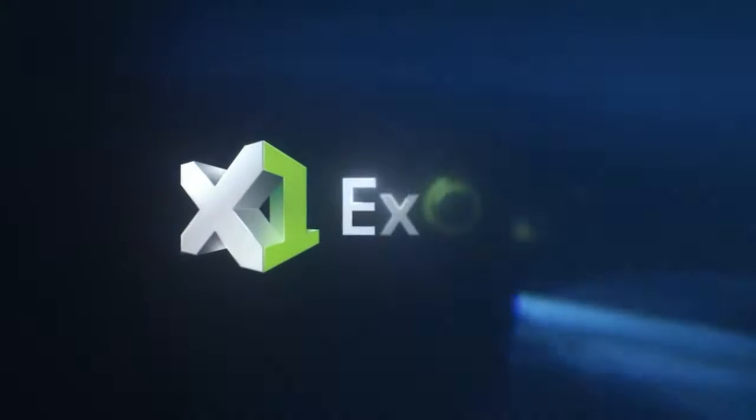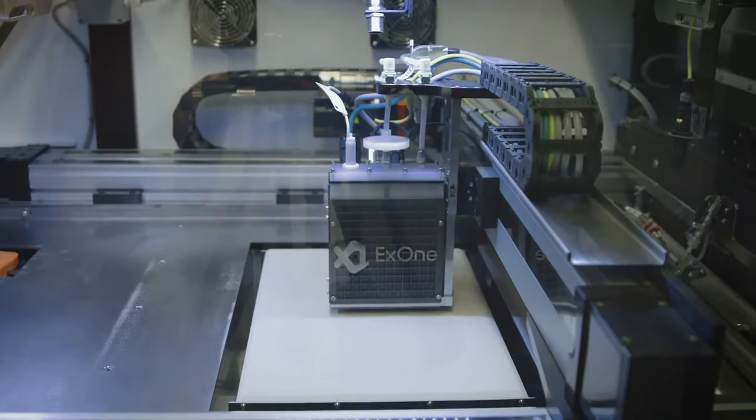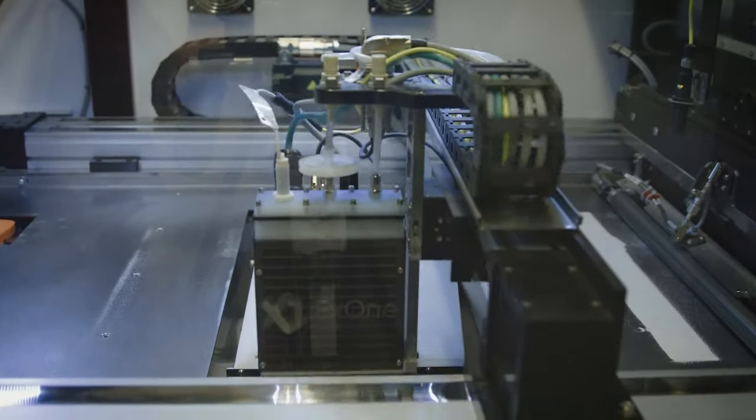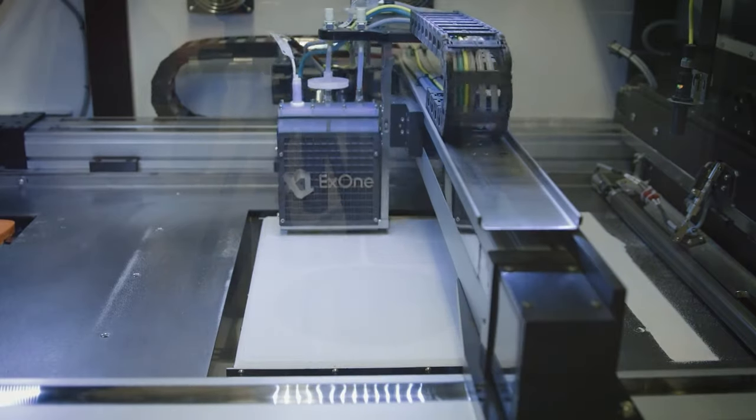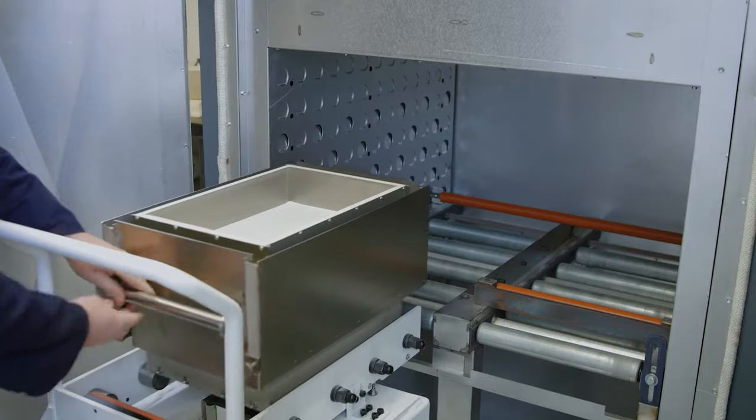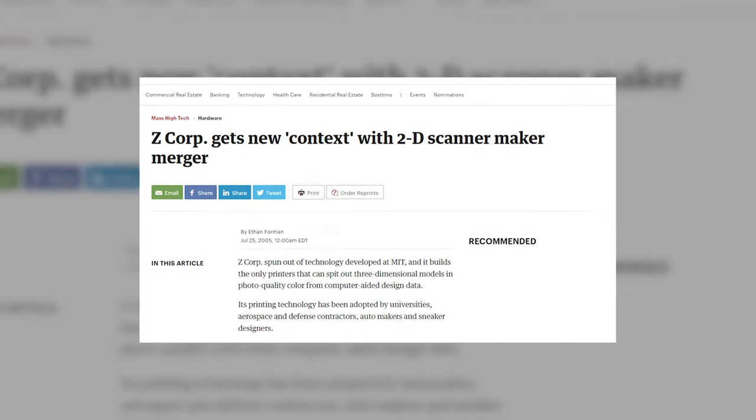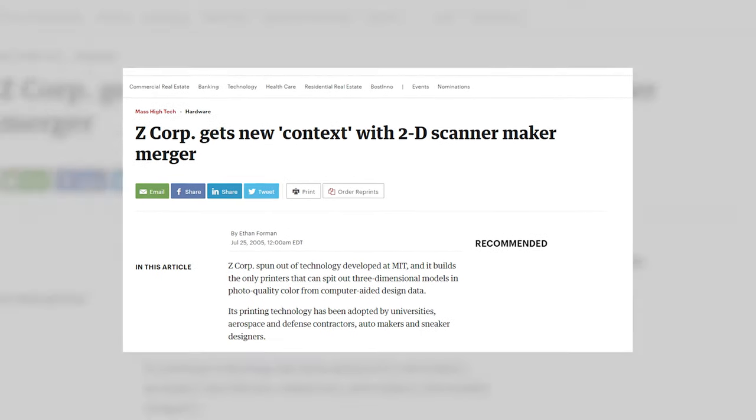Over time Generis split into two separate companies: Voxeljet and ExOne. Today the two companies are leaders in the production of equipment for 3D printing with bulk materials using binder jetting technology. ExOne was sold to Context Holdings in August 2005 and later acquired by 3D Systems on January 3rd, 2012.